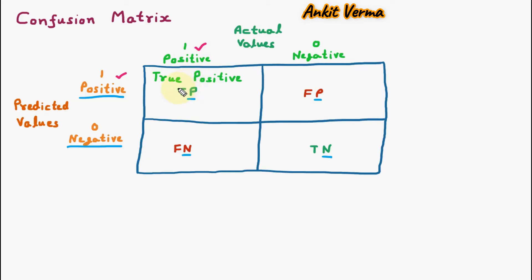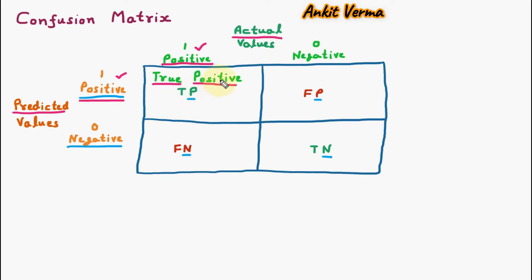We are taking one example. Let us suppose that we have predicted that some person is having a disease — this is a positive prediction — and in actual, they were having the disease, which is also positive. So this is true positive. We predicted the disease and it is actually there, so our prediction is true. This is true positive.